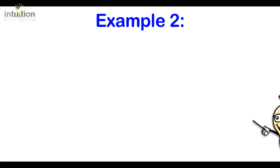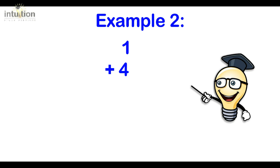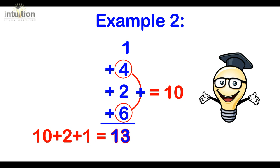Let's make it an extra digit longer. So we've got 1, 4, 2 and 6. What we do first is we look for the complement, so 4 complements with 6 to make 10. Then we add the 2 as 12, add the 1 and 13. So there we go.